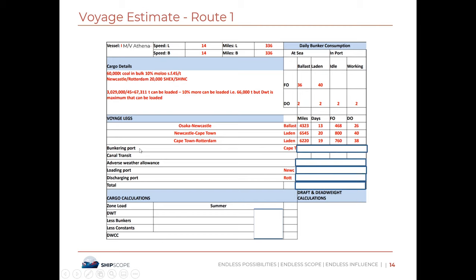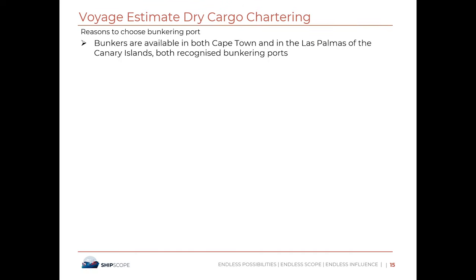Bunkering at Cape Town adds one day; DO consumed 2 tons. No canal transit. Adverse weather allowance: 2 days × 40 FO = 80 tons FO, 2 × 2 = 4 tons DO. Load port: 5 days × 2 DO = 10 tons DO. Discharging: 4 days × 2 = 8 tons DO. Total voyage: 64 days. Total FO consumed: 2,108 tons; total DO consumed: 128 tons.